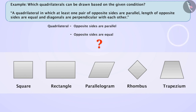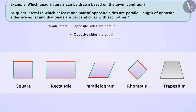Think for a while. In square, rectangle, parallelogram, and rhombus, the length of opposite sides are equal. But in trapezium, the length of opposite sides is not equal. So now we have four quadrilaterals left.